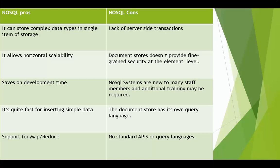Number four, document stores have their own non-standard query language. Finally, there is an absence of standardization — no standard APIs or query languages — which means that migration to a solution from a different vendor is more costly.